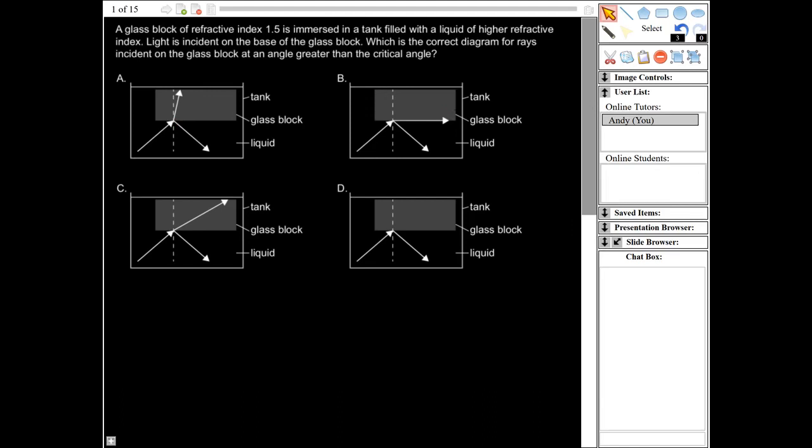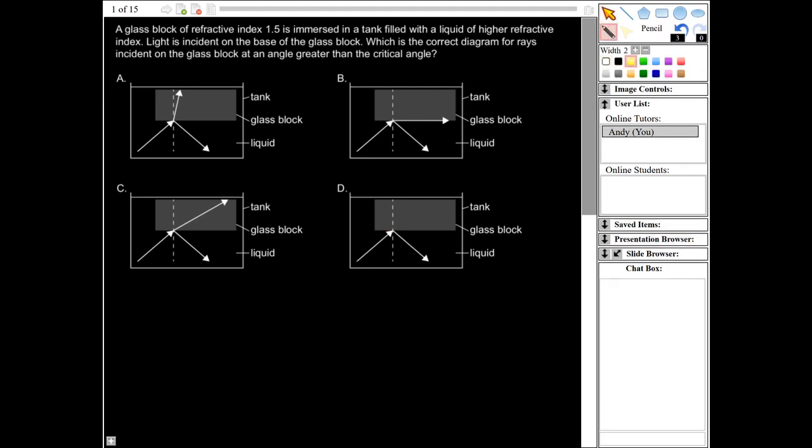So because it's total internal reflection, that means all of the incoming light would be reflected. So that would be this diagram here. In this case, some light is refracted here and here. So the only one where there's total reflection is this one. So the correct answer would be D.